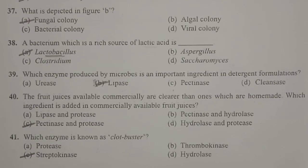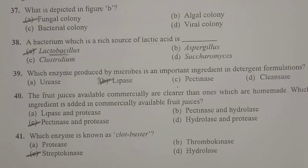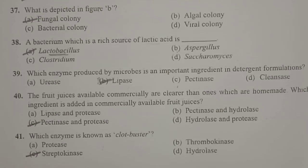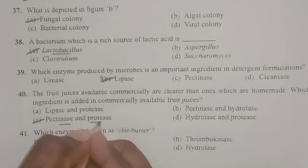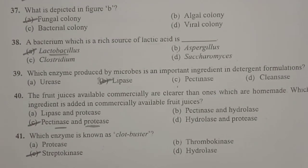Next: commercially available fruit juices are clearer than homemade ones. Which ingredient is added in commercially available fruit juices? Bottled fruit juices are very clear because they are treated with the enzymes pectinases and proteases. These enzymes help in clarifying the fruit juice. That's why bottled fruit juices, treated with pectinases and proteases, appear very clear.